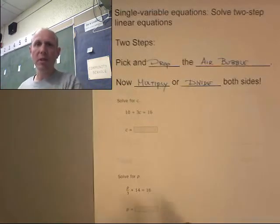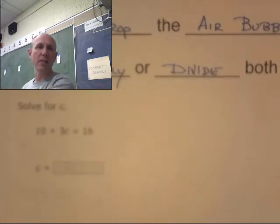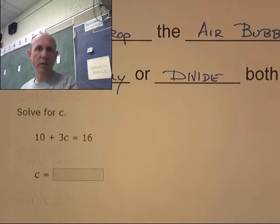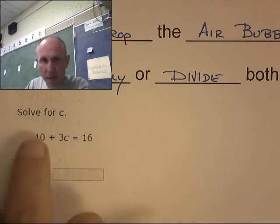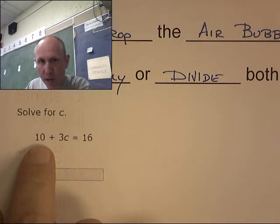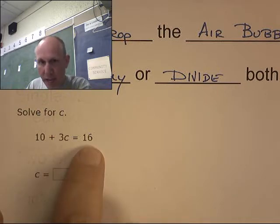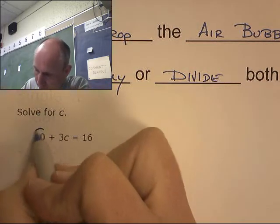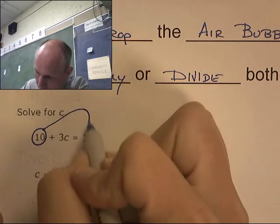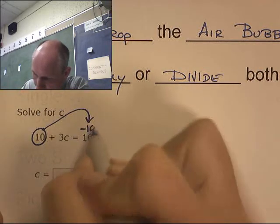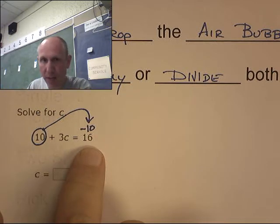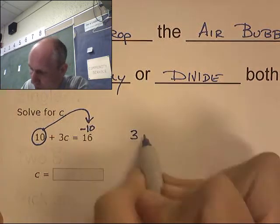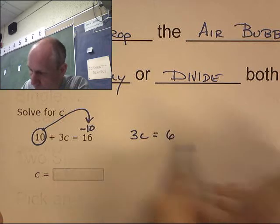Here you go, two-step equation. Remember these are scales, balanced scales or teeter-totters. If I take 10 pounds off this side, I have to take 10 pounds off that side. So if I pick this guy up and drop him on the other side, I'm taking 10 pounds off each side. I now have 3c equals 6.